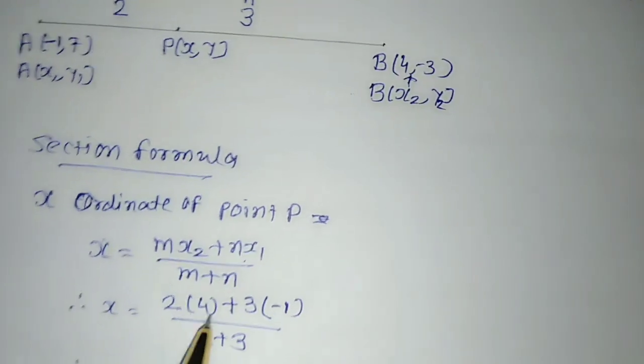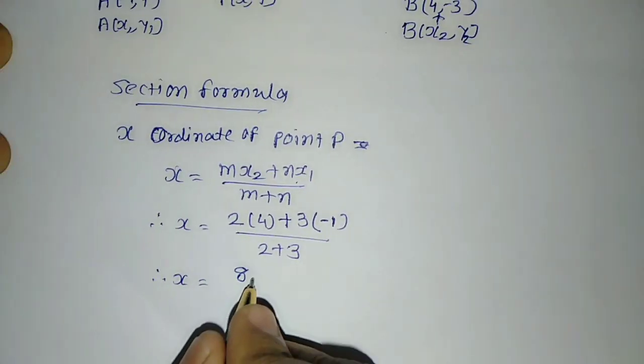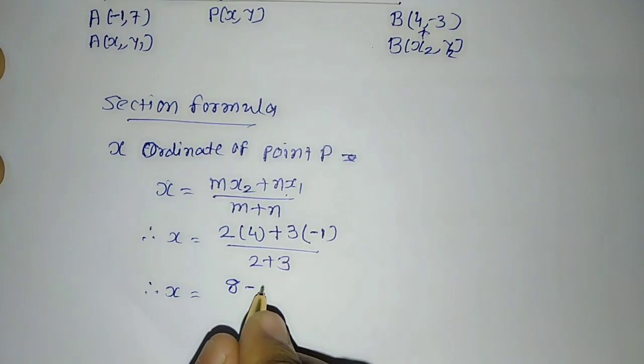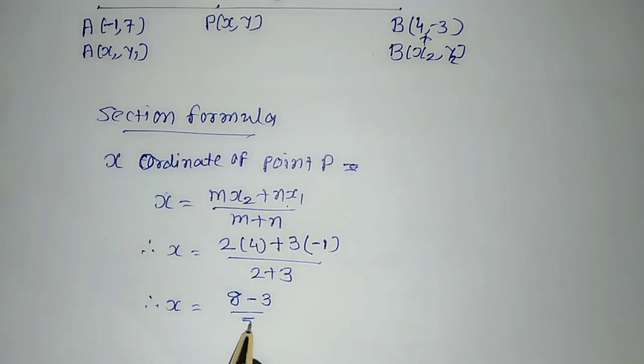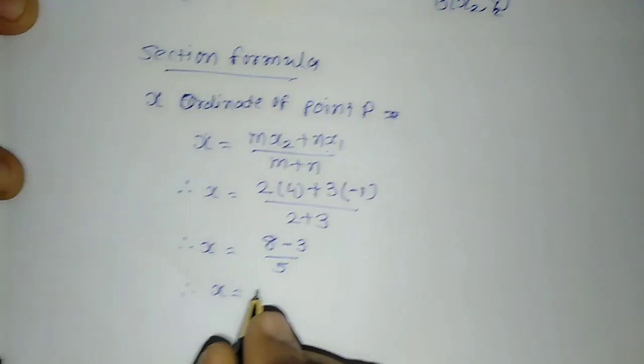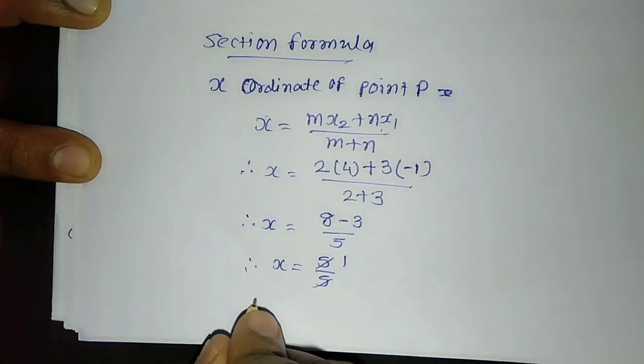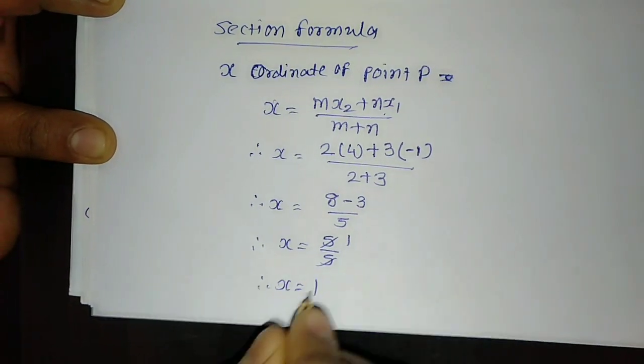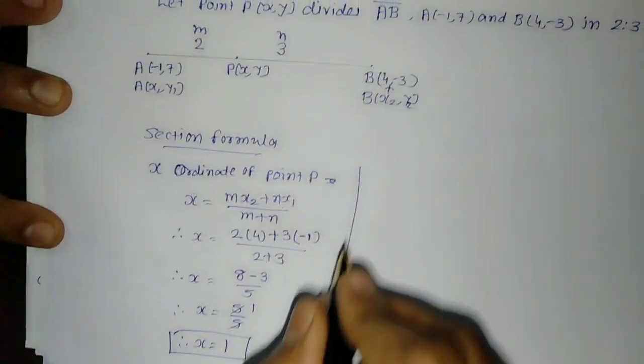Therefore X = (8 - 3)/5 = 5/5 = 1. So X = 1. We got the X coordinate of point P.